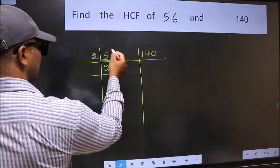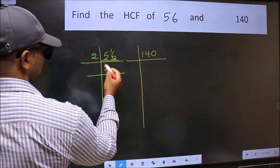1 carried forward makes 16. When do we get 16 in the 2 table? 2 times 8 is 16.